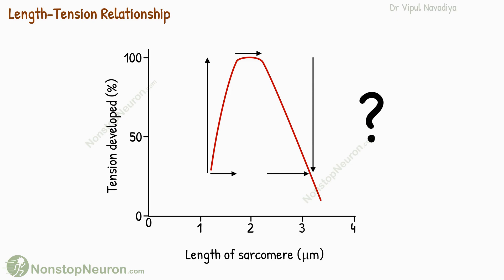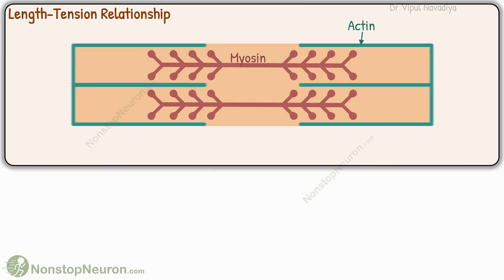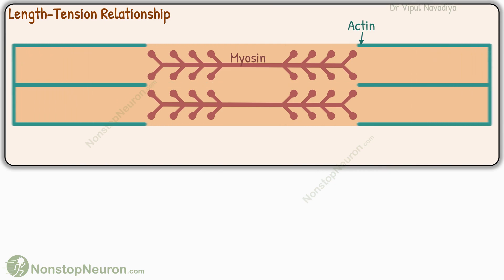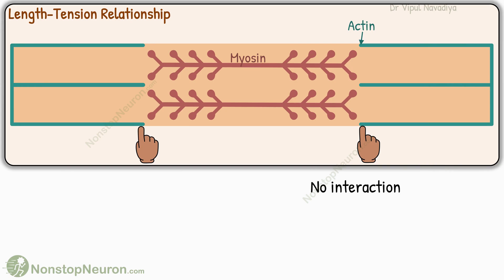But why? The reason is that at different lengths of the sarcomere, the degree of overlap between actin and myosin varies. We will start our discussion with the highest length. At such lengths, the actin filaments are pulled beyond the ends of myosin filaments, so there can be no interaction between the actin and myosin and no force can be generated.